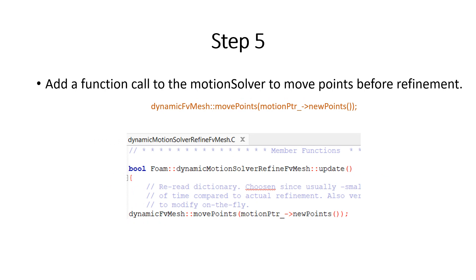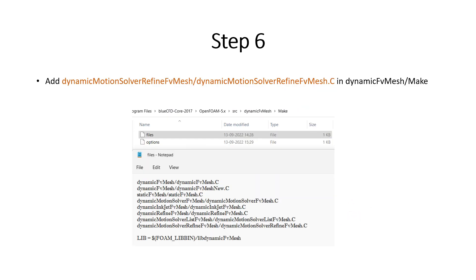Step 5: we will add a function call to the motion solver so that the points will be moved before refinement. This is done by adding a new line in the member functions section, just below the existing update function call. This new line is now added.